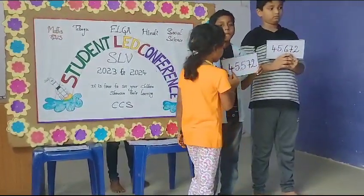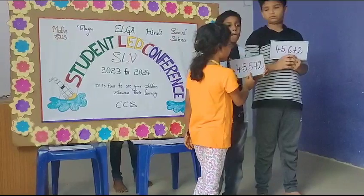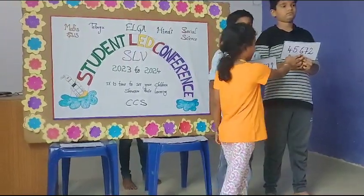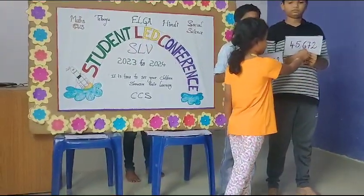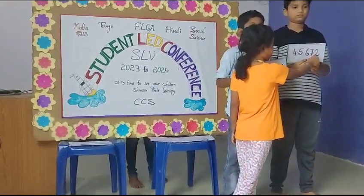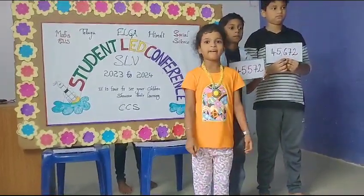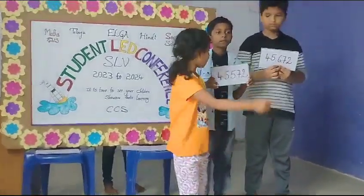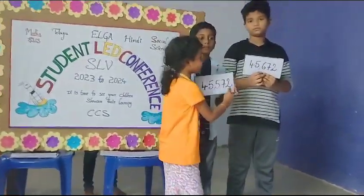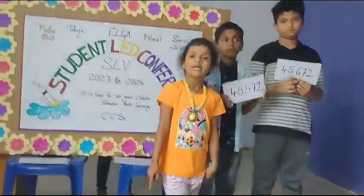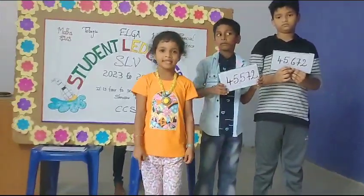The two numbers are 45,572 and 45,672. I will compare on the ones place value — this is 2 and this is also 2, same numbers.